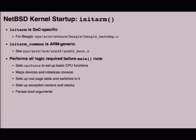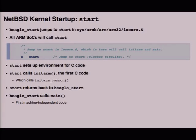Once the environment is set up, start calls initArm, the first C code that runs. initArm (SOC-specific, in BeagleMACDEP) calls initArmCommon, which is ARM-generic in arm32/arm32_boot.c. This sets up the CPU func structure for ARMv7 CPU functions, maps devices and initializes the console, sets up a real page table and switches to it, sets up exception vectors and stacks, and parses boot arguments from UBoot. After initArm runs, control returns to BeagleStart and then main runs — the first machine-independent code.